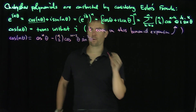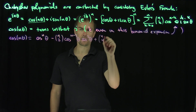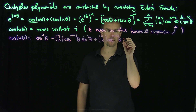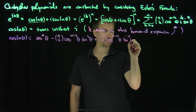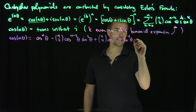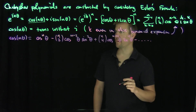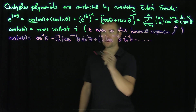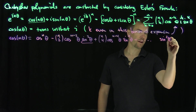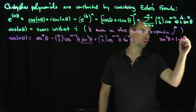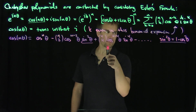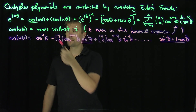When k=4, we get plus n-choose-4 times cosine^(n-4)(theta) times sine^4(theta), and this pattern continues with alternating signs down to the last even term. Every term has an even power of sine, and since sine^2(theta) = 1 - cosine^2(theta), each term can be rewritten as a polynomial in cosine(theta).